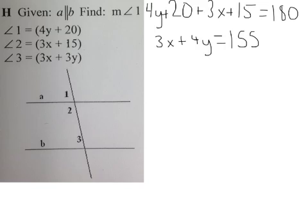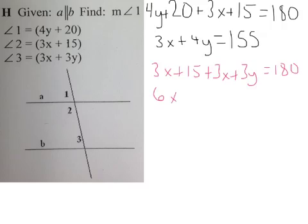My next one is going to be when I add 2 and 3 together and set them equal to 180. So I can get 3x plus 15 plus 3x plus 3y equals 180. And I get 6x plus 3y equals, well, 180 minus 15 gives me 165.